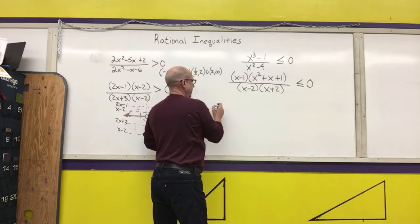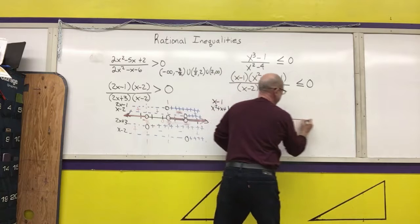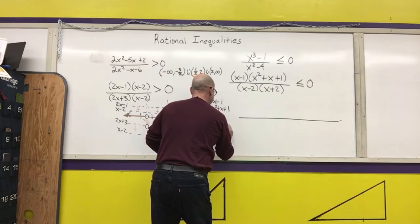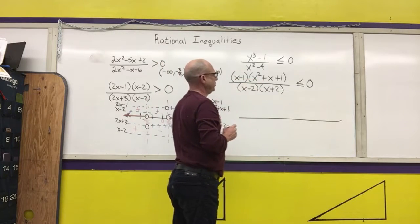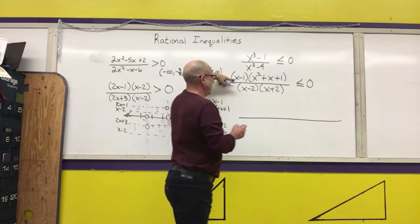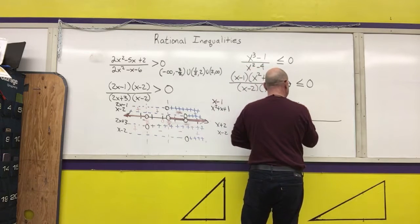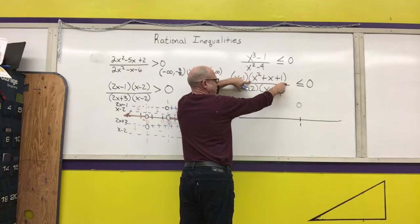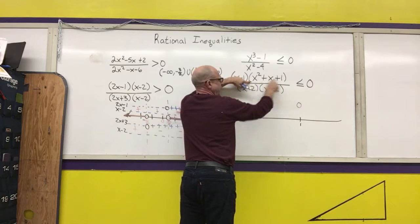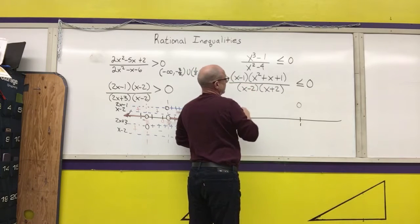Next rational function. I want to write the factors of my numerator and the factors of my denominator, then identify when each of these are equal to zero. x minus 1 is equal to zero when x equals 1, so I have a zero there. The other term is never equal to zero on the real number line — it would give complex solutions.